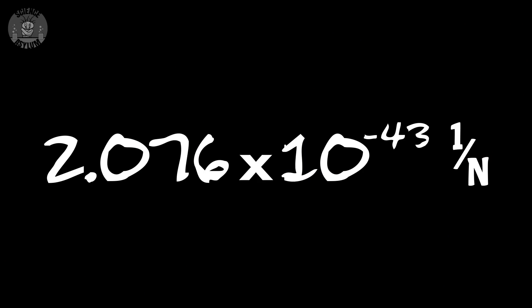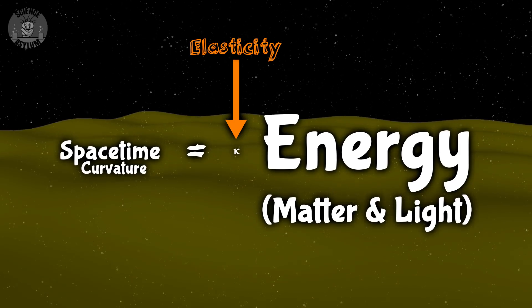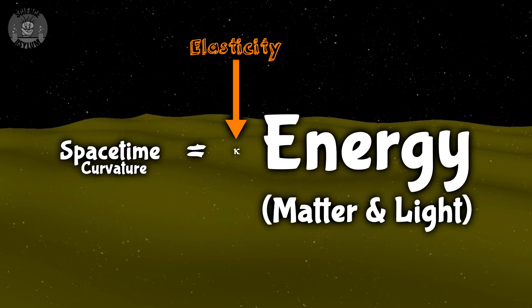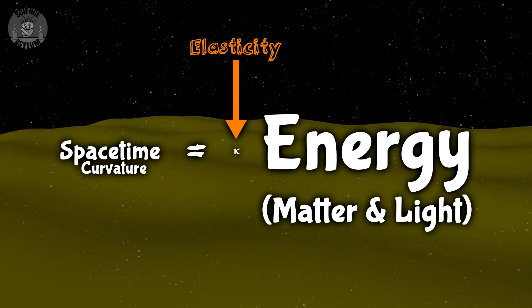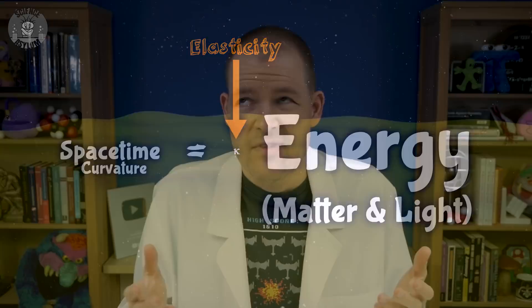So, how elastic is the fabric of the universe? Not very elastic at all, actually. It's on the order of 10 to the minus 43. It takes a ridiculous amount of matter or light in one place to even notice gravity. Space-time might not actually be a fabric, but whatever it is, it's pretty rigid stuff.